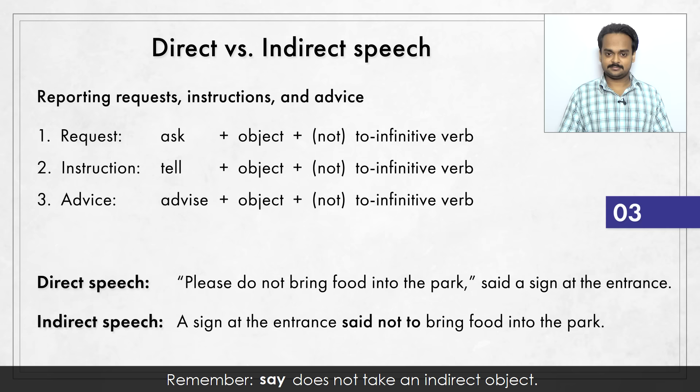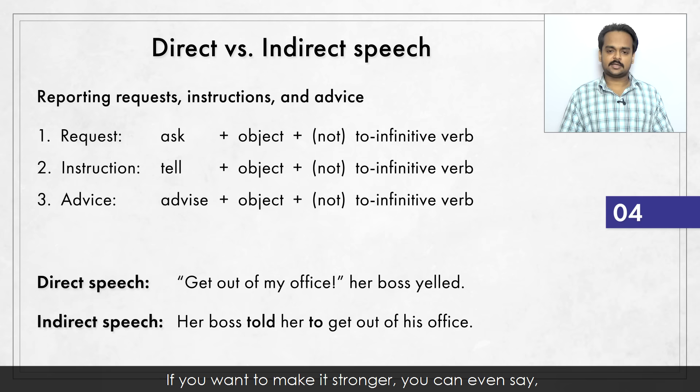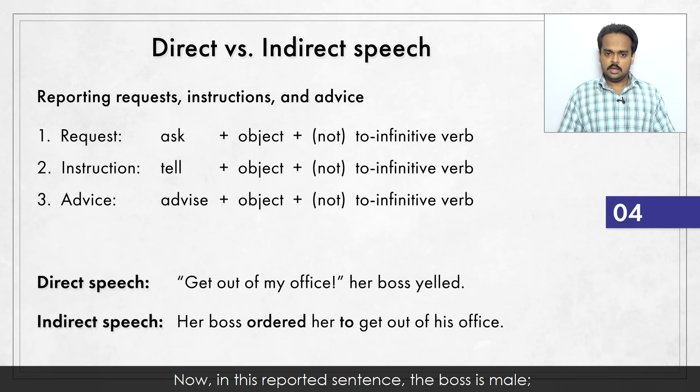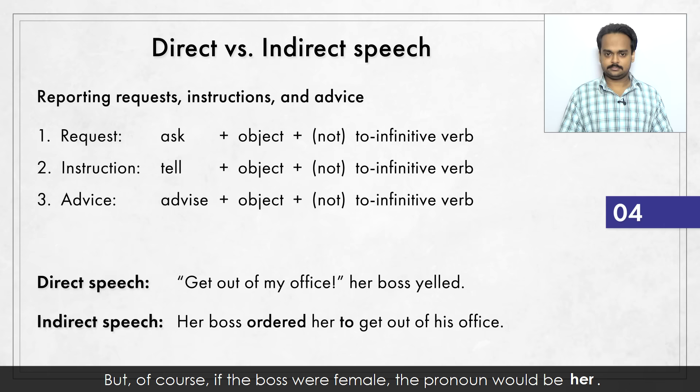Next sentence involves yelling – to yell means to shout with anger. Her boss told her to get out of his office. If you want to make it stronger, you can even say: her boss ordered her to get out of his office. In this reported sentence, the boss is male, that's why we've said "to get out of his office". But of course, if the boss were female, the pronoun would be "her". Number 5 – Philip's doctor told him, "You should exercise more." Philip's doctor advised him to exercise more.